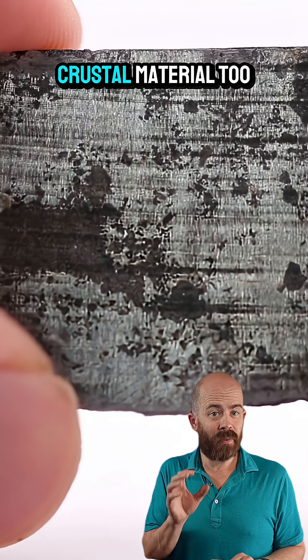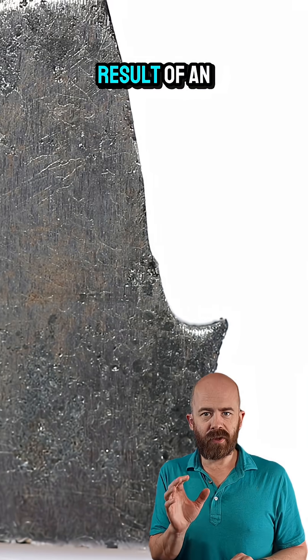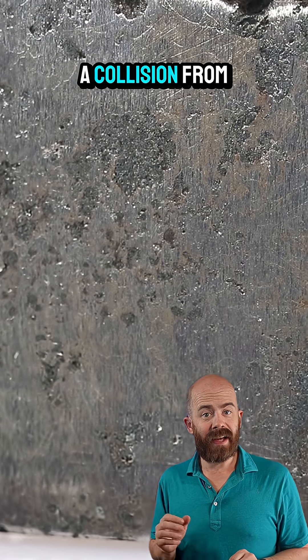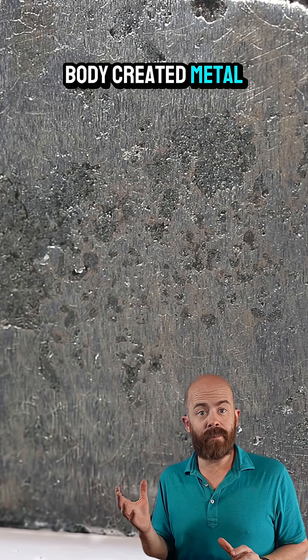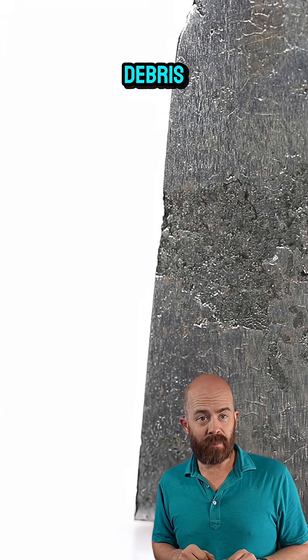It's mixed with crustal material too, but how does that happen? Well, it's probably the result of an impact. The iron was the core of a planet that probably no longer exists. A collision from some other large body created metal silicate melt pools where molten iron mingled with rocky debris.